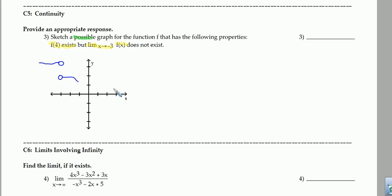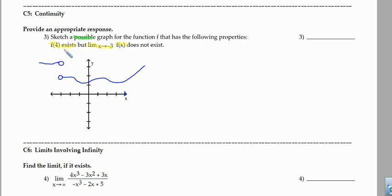Now I just have to make sure that I do have a value at 4, so let's go 1, 2, 3 — let's indicate that 4 would be here and make sure that we have a dot at 4, or at least the graph passes smoothly through 4. There we go. We have a function where f of 4 exists but there's no limit at negative 3.